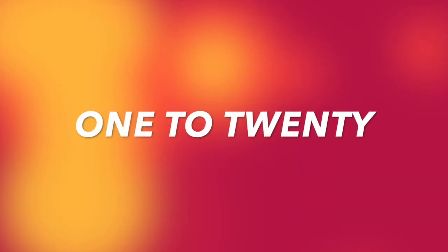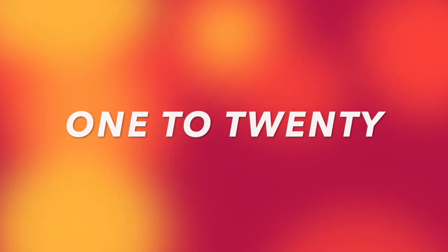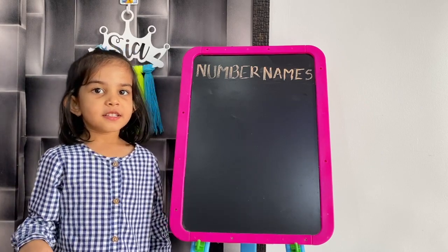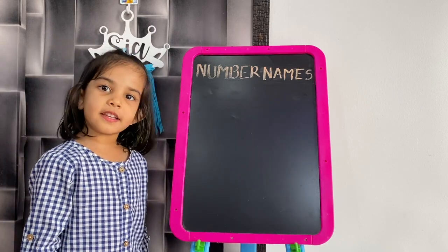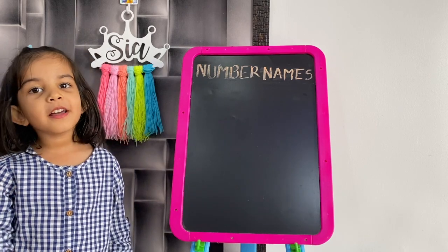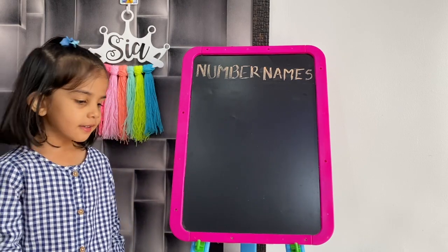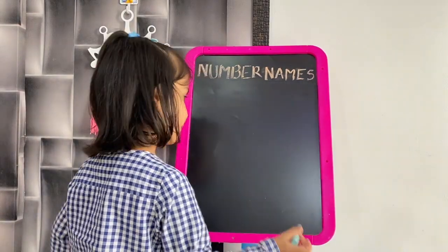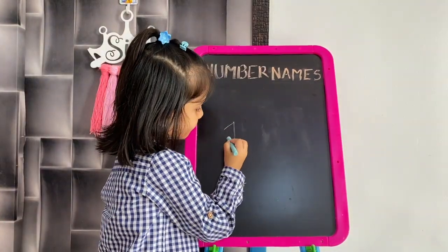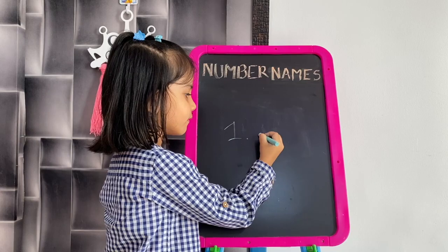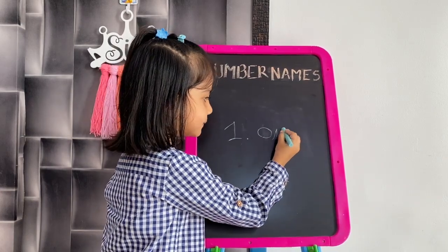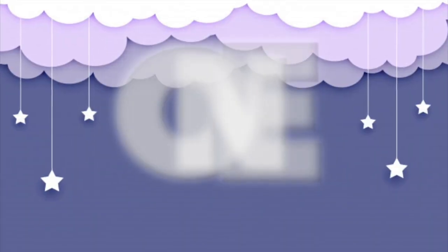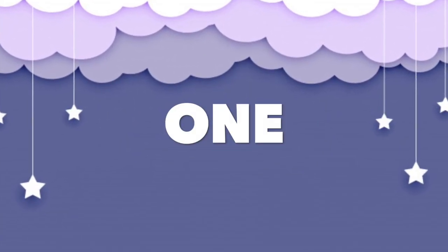1. Now I will write the spelling of one. O, N, E. 1. O, N, E. 1.